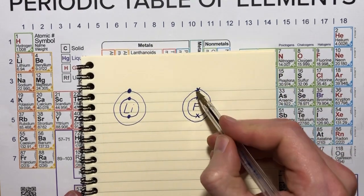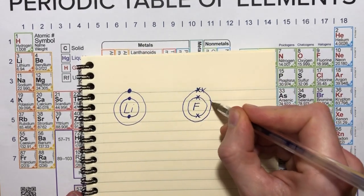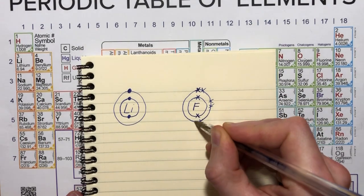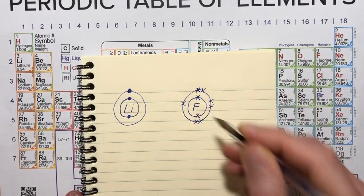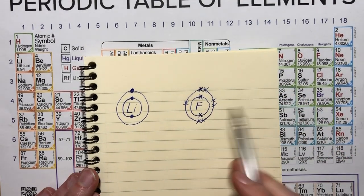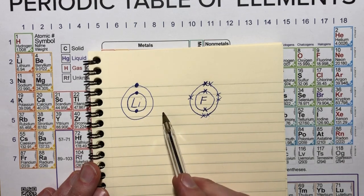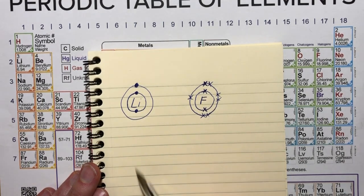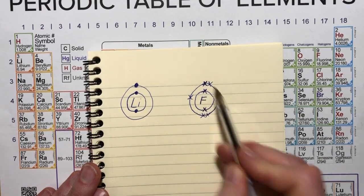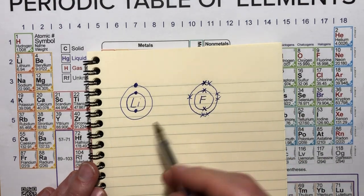So I've got two, and then one, two, three, four, five, six, seven. Now, when these bond, remember, they want to achieve a full outer shell. I'm not going to draw all of the shells next time. I'm just going to draw the outer ones because they're the ones involved in bonding.